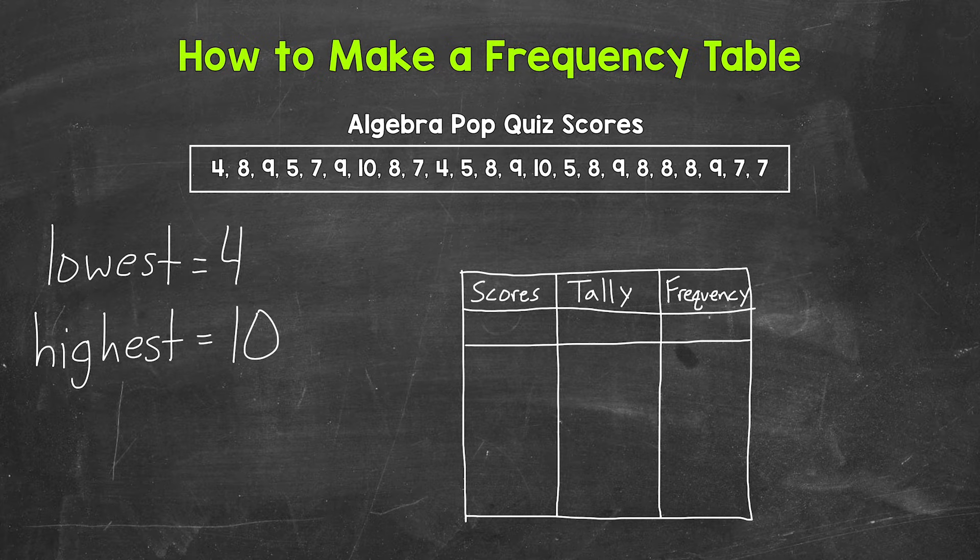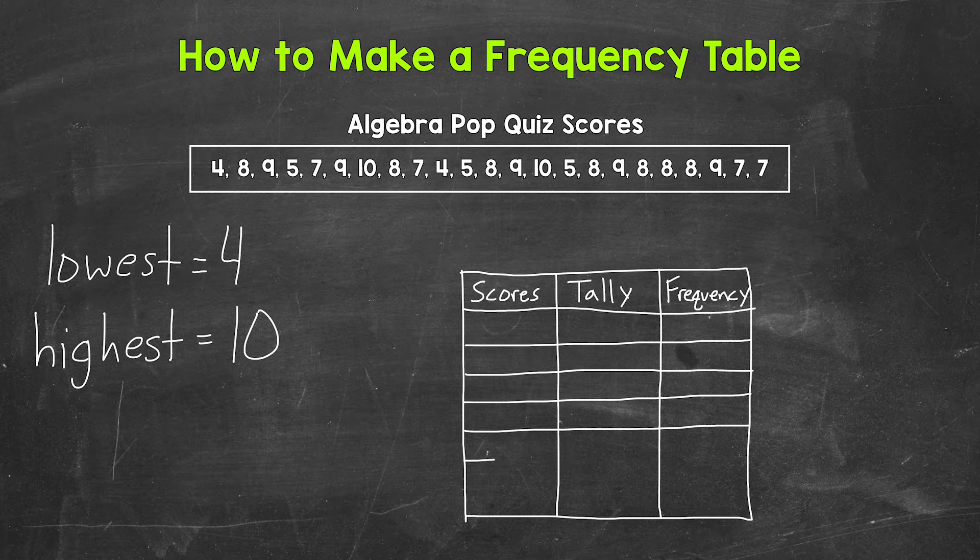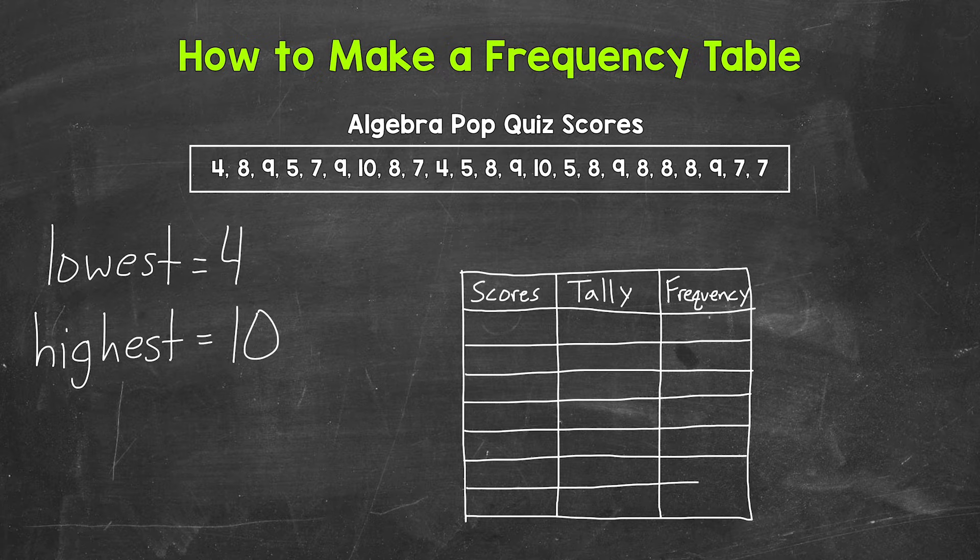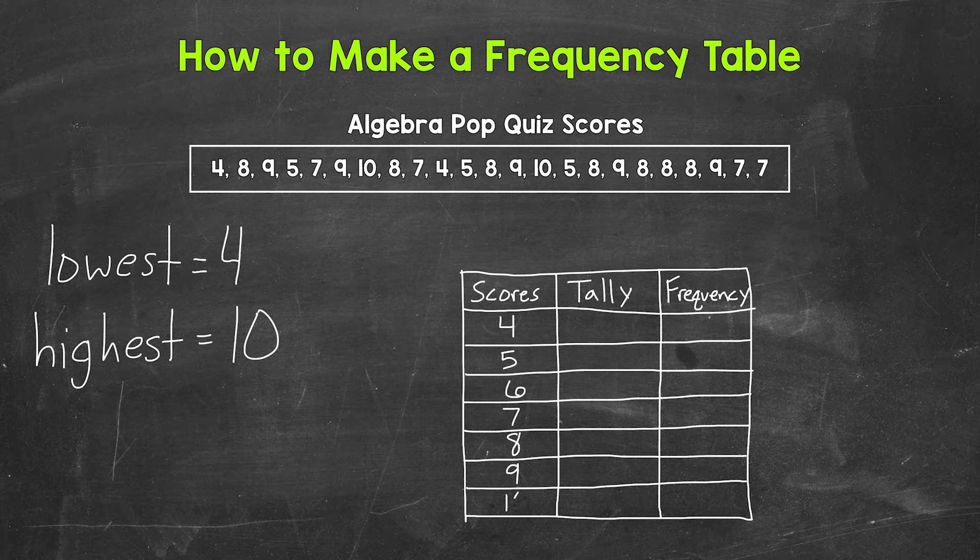Now that we have our rows, we can fill in the scores. So we have four through 10. So four, five, six, seven, eight, nine, 10.